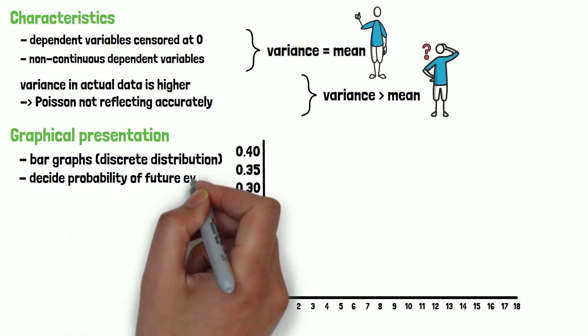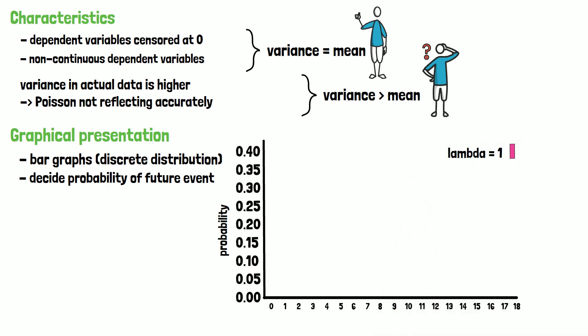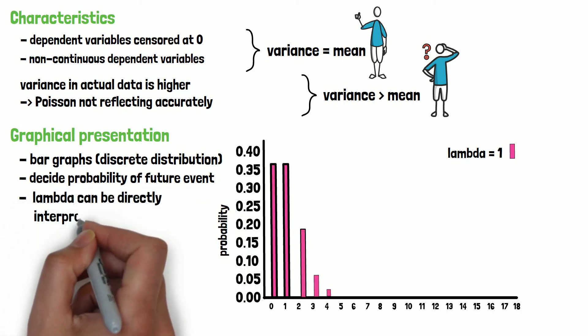Probability distributions help you decide the probability of a future event. Here we can see three examples of probability distributions for different lambda, where lambda can be directly interpreted as the number of events that are expected.